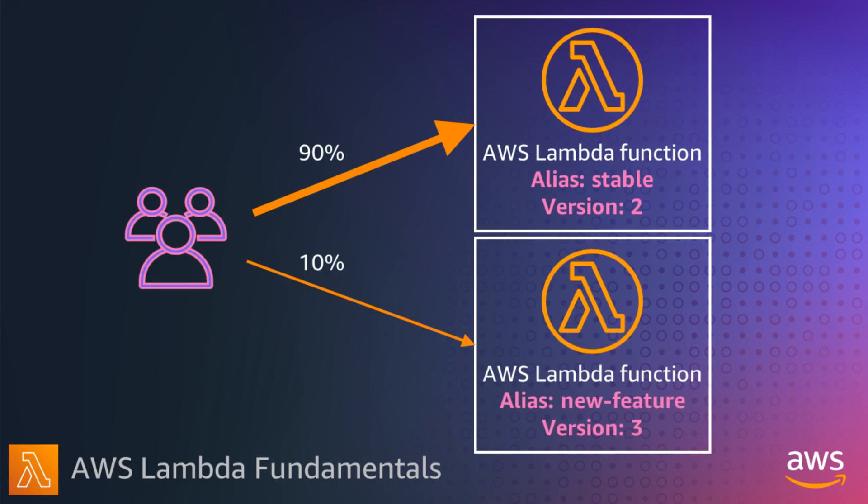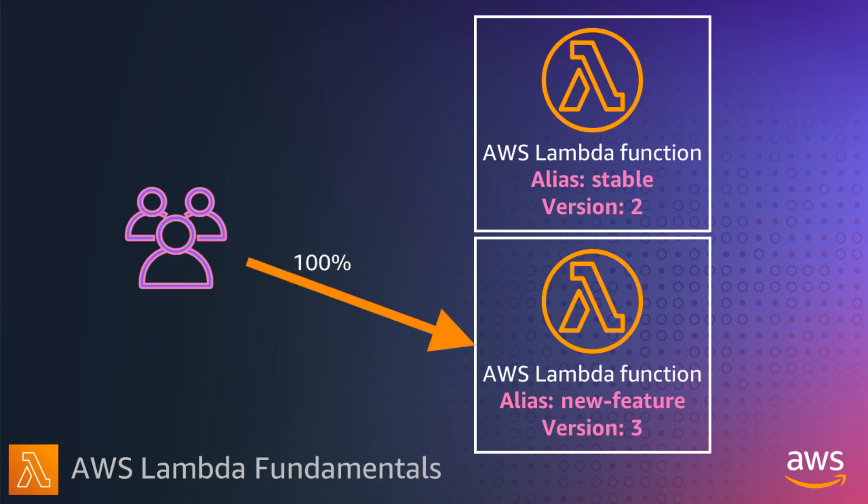You can also use routing configuration on an alias to send a portion of traffic to a second function version. You can reduce the risk of deploying a new version by configuring the alias to send most of the traffic to the existing version and only a small percentage to the new version. Lambda also integrates with AWS CodeDeploy for automated rollout with traffic shifting. CodeDeploy supports multiple traffic shifting methods. You can monitor the deployment and trigger an alarm if any errors occur during rollout, which can automatically roll back your deployment, helping you roll out new Lambda function versions confidently.